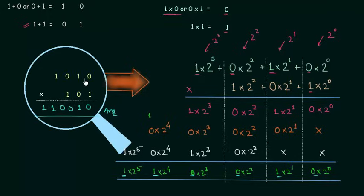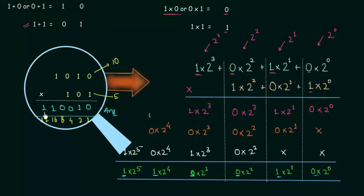You can cross-check: 1010 in binary is 10 in decimal, and 101 is 5. Evaluating the result in decimal — the positions represent 1, 2, 4, 8, 16, and 32. We have 32 and 16 but not 8 or 4; we have 2 but not 1. So 32 plus 16 plus 2 equals 50. And 10 multiplied by 5 is 50, so our answer is correct.